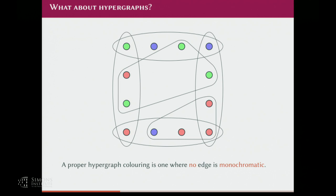So what I'm really going to talk about is hypergraph colorings. I move on to hypergraphs. The coloring I'm working with is a weak coloring, where I only want to forbid monochromatic edges. So no edge is monochromatic — these boxes are hyperedges.